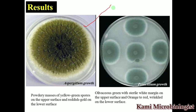The result shows luxuriant growth of fungi due to the presence of potato infusion and dextrose ingredients. These are Aspergillus growths — species like Aspergillus niger and Aspergillus candida. These are growths of Penicillium — different species like Penicillium and Fusarium. Aspergillus species produce powdery masses of yellow-green spores on the upper surface and a reddish-gold color on the lower surface.